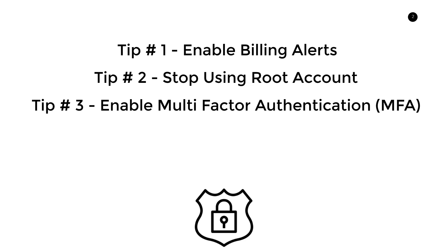My third tip, also along the lines of security, is to enable multi-factor authentication or MFA for short. AWS makes this really easy — it all happens through the IAM section of the AWS console. You select which type of MFA you want and it just takes a couple minutes to set it up. There are hardware devices like YubiKeys, but what I use is the Google Authenticator app. You download it on your iPhone or Android device, and once configured, when you log in you open up the app, read out the code, and input it into the prompt when signing into your account.